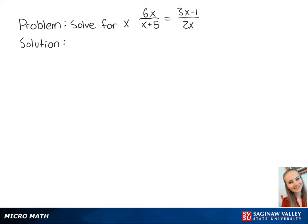For this problem, let's solve for x in this equation. To remove the fractions on both sides, we want to multiply both sides by both of the denominators. So we're going to multiply both sides of the equation by x plus 5 and 2x.